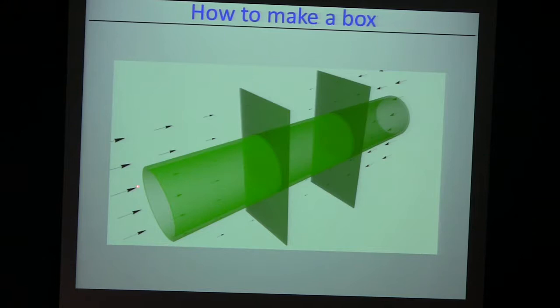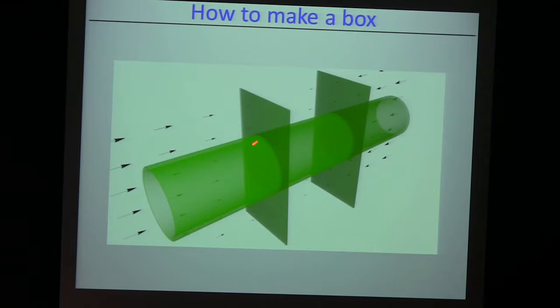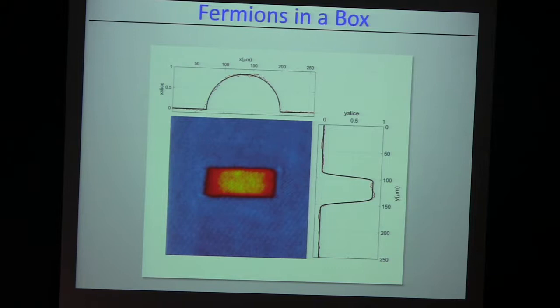This is a fancy 3D version of it. This is the ring of light, and these are two end caps — which are themselves laser beams that are masked off so that we get a shadow region in between. So we have a cylinder with end caps, essentially. There is a weak magnetic field curvature across the cloud. But inside this box region, it is negligible compared to the Fermi energy — the variation in potential energy is negligible compared to the Fermi energy of our gas. That's the box.